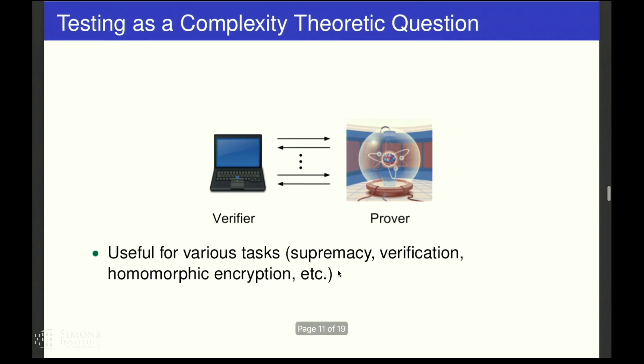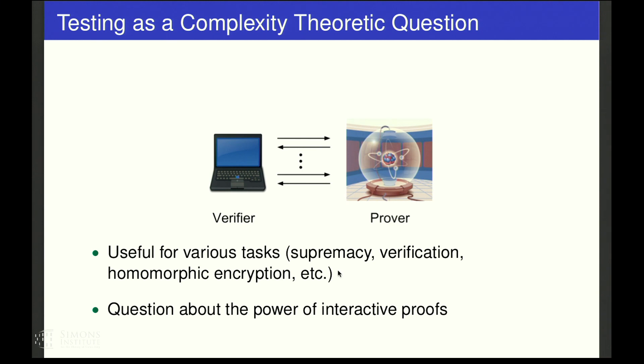There are many things we could hope to verify. For example, we could want to verify that the machine is quantum, achieving quantum supremacy, or verify the output of a general quantum computation, or something like homomorphic encryption or certified randomness generation. But all of these questions are just about the power of interactive proofs. How much power can this weak classical verifier have over a quantum prover?